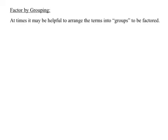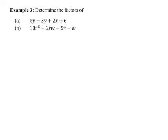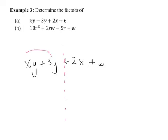The next topic is factoring by grouping, where it helps to arrange terms into groups. Example 3, part A: determine the factors of xy plus 3y plus 2x plus 6. The way grouping works is to look at it in two separate parts — put an imaginary line down the middle. There's no GCF for all four terms, but there is a GCF within each pair. On the left, xy plus 3y has a y in both terms, so pull it out front, leaving x plus 3.